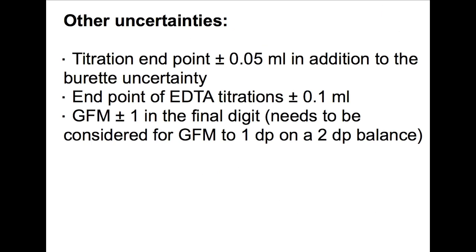There are some other uncertainties to take into account. The end point of any titration is always plus or minus 0.05 millilitres — this is the volume of one drop, roughly the amount you'll be out in most titrations. This is in addition to any burette uncertainty from calibration. EDTA titrations are notoriously difficult to see the colour changes of, so the end point of an EDTA titration is 0.1 millilitres. If you're using a two decimal place balance but your gram formula mass is only calculated to one decimal place, you need to consider an error of plus or minus one in the final digit. If your gram formula masses are calculated to two decimal places, you don't need to consider this.